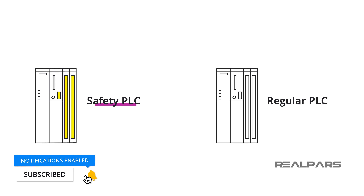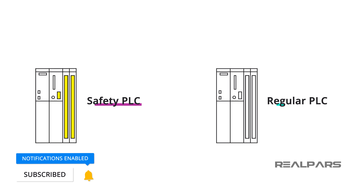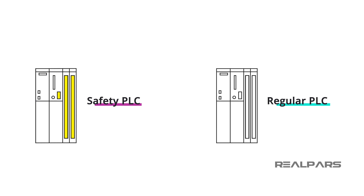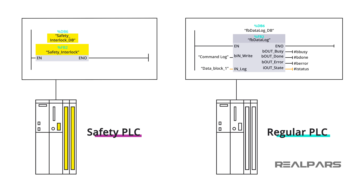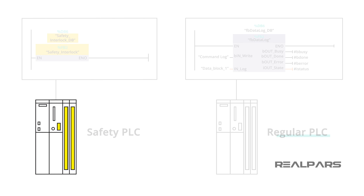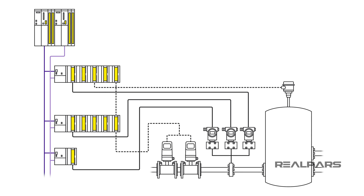A Safety PLC is just like a regular PLC and is programmed the same way, but it has extra features like redundancy, and added hardware functionality that adheres to a specific Safety Integrity Level, or SIL.